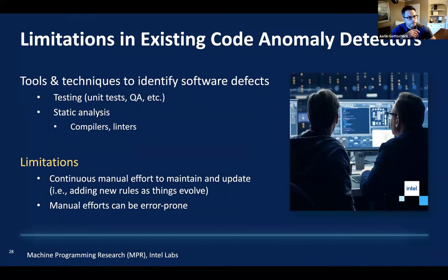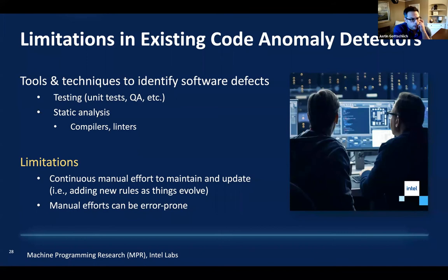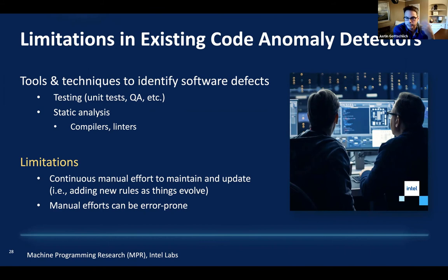There are existing code anomaly detectors: unit tests, quality assurance, static analyzers, compilers, and linters. Your compiler tells you if it's syntactically correct; linters say if something's abnormal; tests tell you whether the program behavior is right. They're all trying to detect anomalies in different ways. But the problem with all of these approaches historically is they all require manual effort to update and maintain — a human has to come in and define what the intermediate representation is. Chris Lattner had to construct LLVM and MLIR, figuring that out in his head.